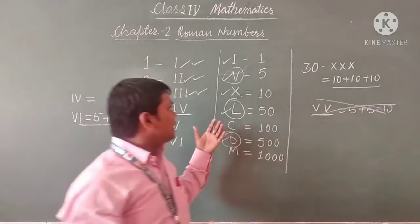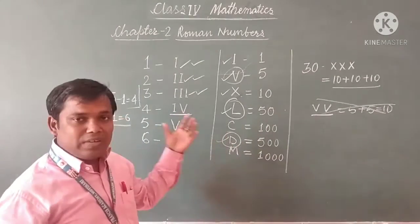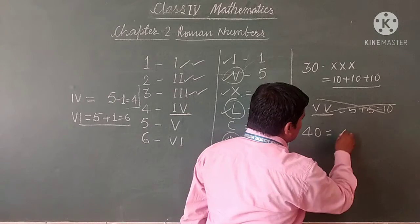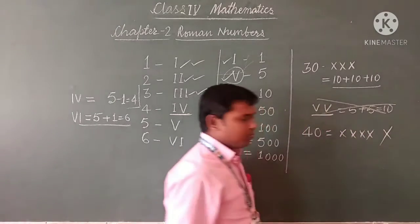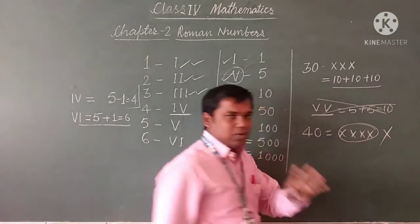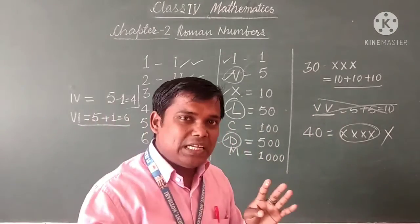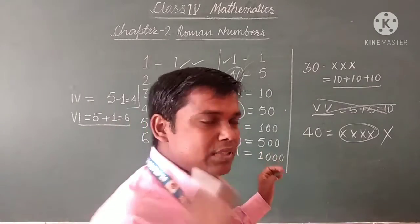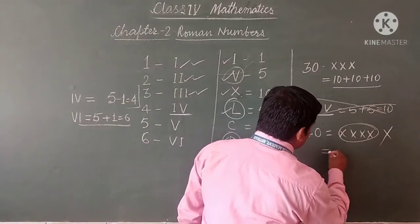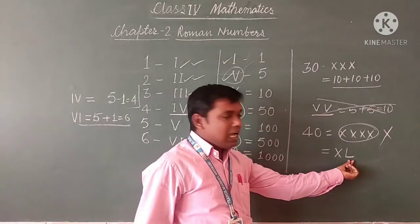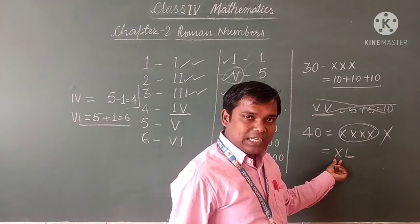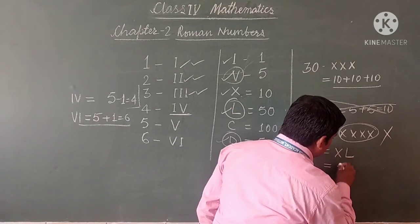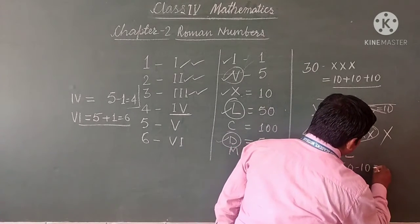So these are the things we have discussed in this chapter. Suppose you have to write 40 — you cannot write four X's, as the rule states we cannot repeat any Roman symbol more than 3 times. So we write XL for 40. L has the value 50 and X has the value 10. X is written before L, so we subtract: 50 minus 10 equals 40.